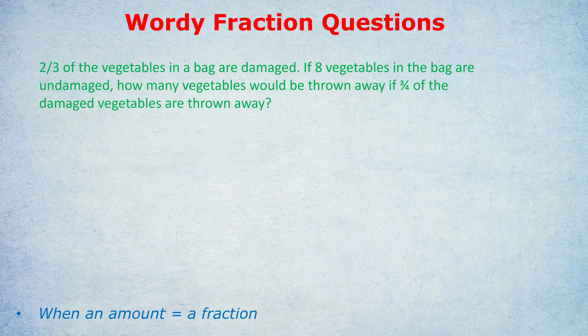Again, they've given us a fraction and an amount. But what fraction does that amount equal? If we know that two-thirds of the vegetables are damaged, what fraction are undamaged? That would be one-third. So one-third are undamaged. Therefore, those eight vegetables that are undamaged must equal one-third of the total. And that's the equation we write down. The eight vegetables that are undamaged must be one-third of the total if two-thirds are damaged.